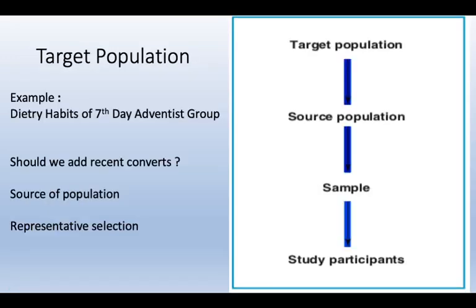The next question is: what would be the target population? As in the previous slides, we discussed breastfeeding practices and targeted women of a specific age range. Similarly, consider an example of the dietary habits of the Seventh-day Adventist group, which doesn't eat meat and relies on vegetables, localized in the USA. In order to assess their diet and associated disease outcomes, our priorities would be: should we add recent converts, what is the source of population, and what is the representative selection criteria?